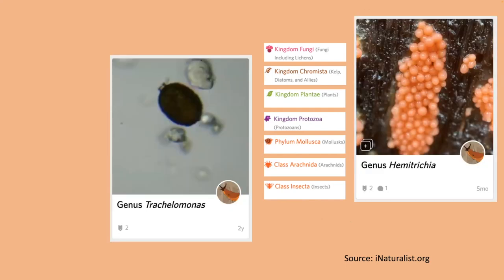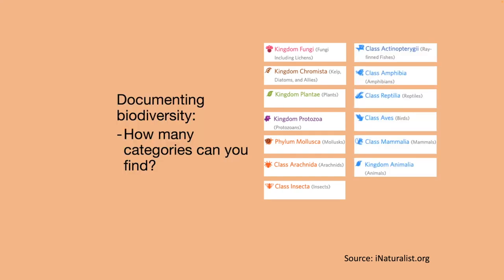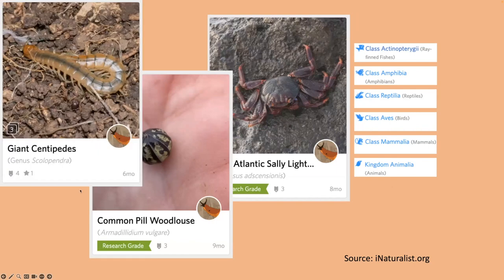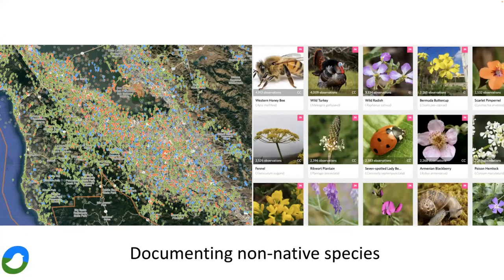The other categories include protozoa, plants, molluscs, arachnids (spiders and their relatives), insects, fish, amphibians, reptiles, birds, mammals, and other animals — like crustaceans that are crabs and roly pollies and even centipedes. People often ask if they should document non-native species — it's really important to document them. For different restoration projects and studies, it's really important. They are part of the biodiversity here, even if we should remove some of them. For threatened species, iNaturalist will automatically obscure the location of those observations, but if you're still worried you can obscure them manually.